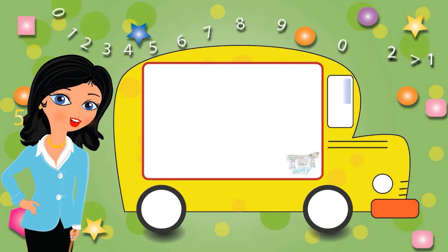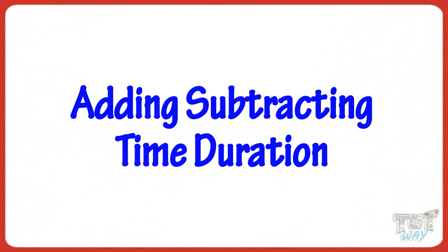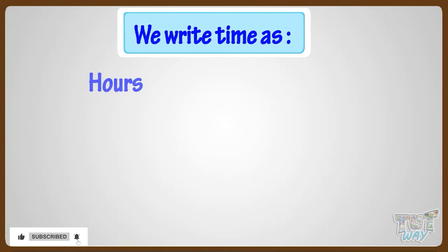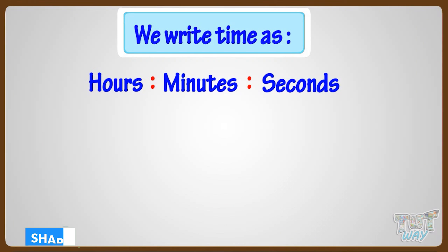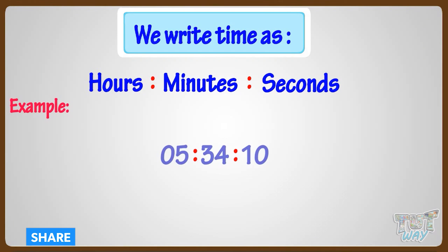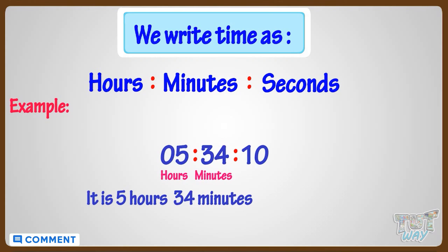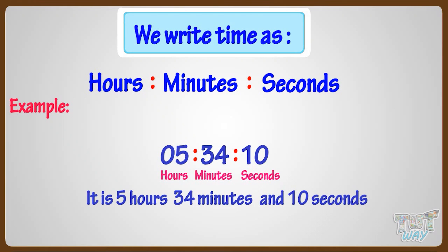Hi kids! Today we will be learning adding and subtracting time duration. So let's get started. First of all, we should know that we write time as hours, minutes, seconds. For example, here it is 5 hours, 34 minutes, and 10 seconds. Now we will learn how we can add time.